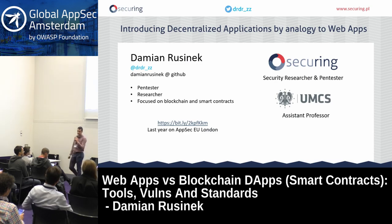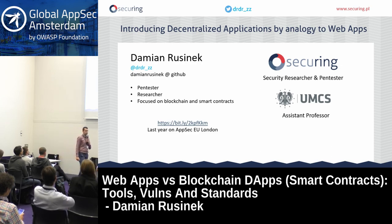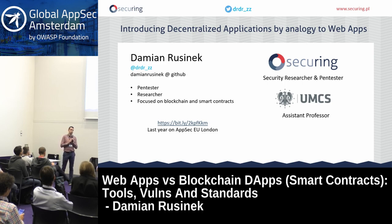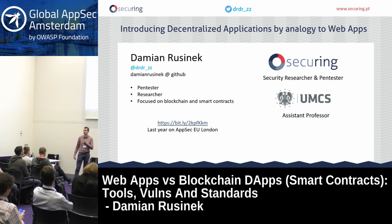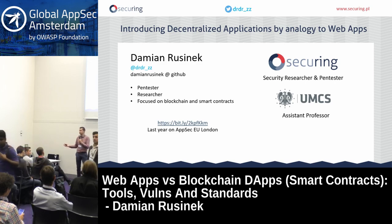Hi guys, my name is Damian Rusinek. I'm a security researcher and a pen tester, mainly focused on blockchain technology and smart contracts. Last year at OWASP AppSec Europe in London, I gave a talk about vulnerabilities in smart contracts and did a small showcase. But this year, I wanted to focus on the whole process of development of smart contracts and show you how to make it secure.